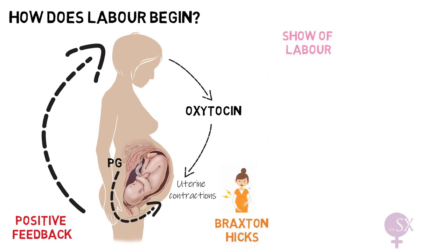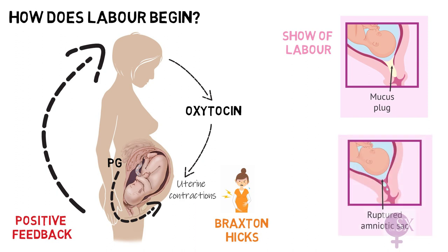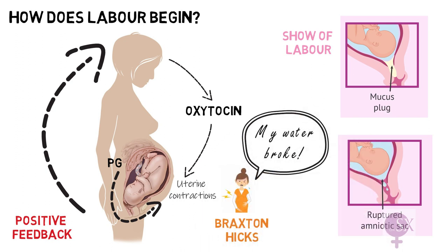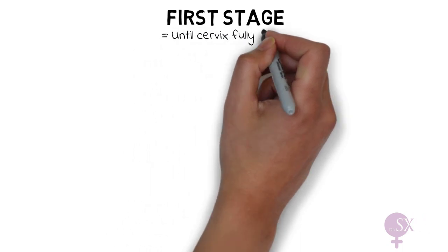Initially these contractions will be mild and irregular and are referred to as Braxton Hicks contractions or false labor pains. These contractions may be accompanied by the show of labor — this refers to the mucus plug which covers the cervical os. It protects the cervix and prevents bacteria from entering the uterus. It is supported by estrogen, so when estrogen starts to decline at the end of pregnancy the mucus plug will fall and present as a pinkish discharge. The uterine contractions may also result in rupture of the amniotic membranes and the mother will experience a sudden gush of fluid.